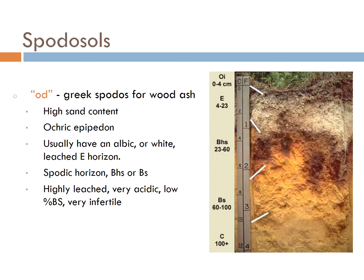Spodosols — OD — from the Greek 'spodos,' meaning wood ash. They have high sand content, an ocric epipedon, usually an albic or white leached E horizon, and a spodic horizon. These are very acidic, very leached, very low base saturation — basically infertile soils, almost worthless agriculturally. But despite all that, soil scientists love them because they're like the unicorns of soil — really difficult to find, very rare, and absolutely stunning, forming these really beautifully leached E horizons that are very light in color.